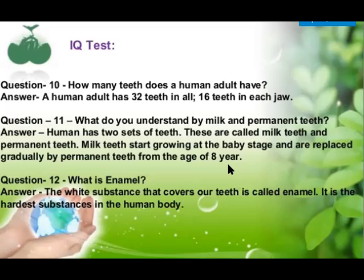What is enamel? The white substance that covers our teeth is called enamel. It is the hardest substance in the human body. It covers the teeth as the outermost layer and is white in color.